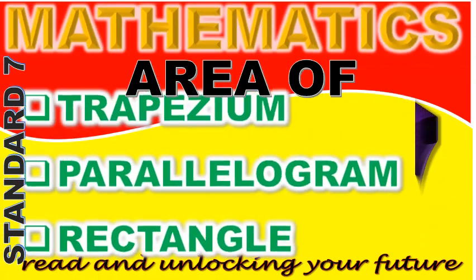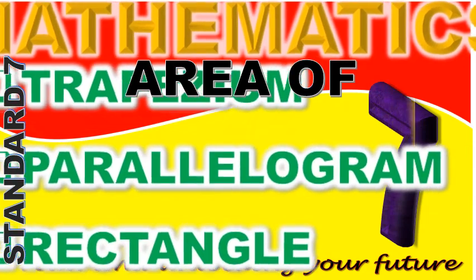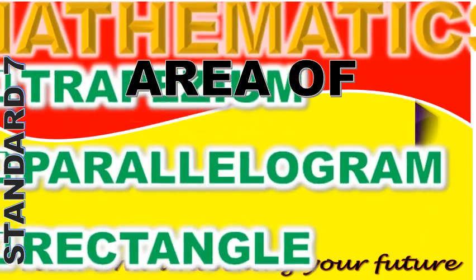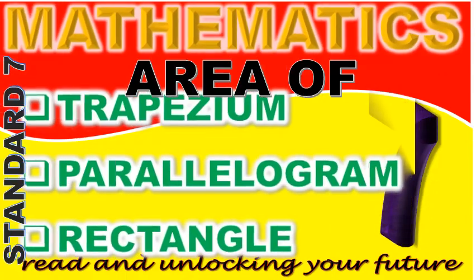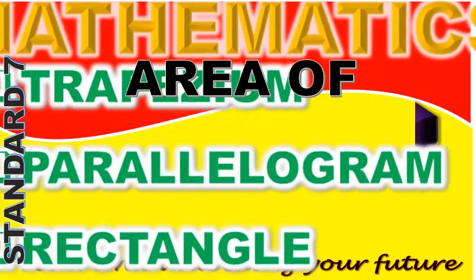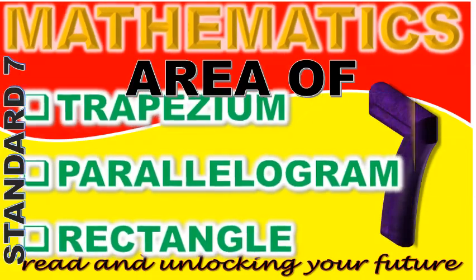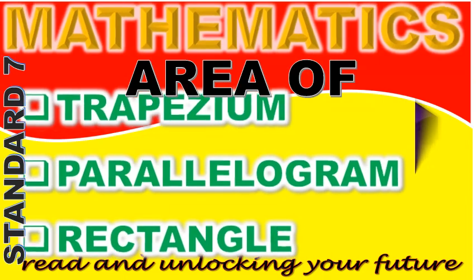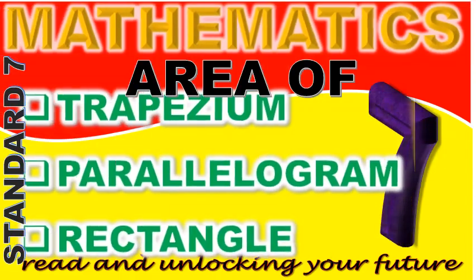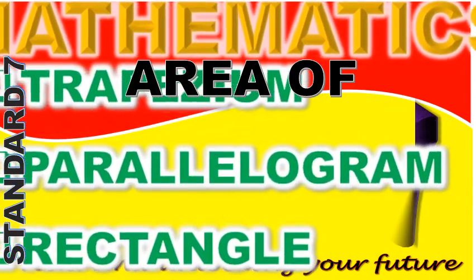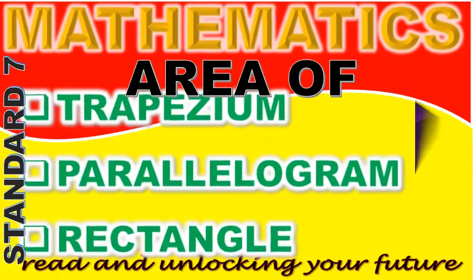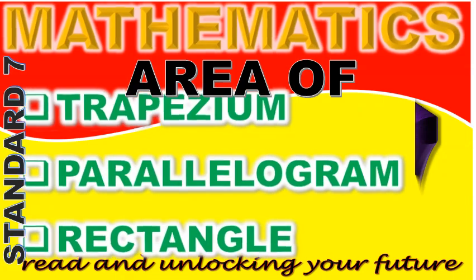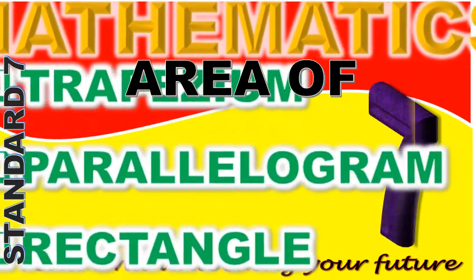Class, what is a quadrilateral? Give the answer to your teacher. Hamisi, what is a quadrilateral? It is a closed four-sided figure. Good, Hamisi. Class, did you get the correct answer? Good. Teacher, write the word quadrilateral on the chalkboard. A quadrilateral is any four-sided figure. Class, give your teacher examples of quadrilaterals.